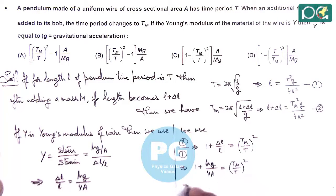And simplifying this gives us a value of 1/Y, which we are required to calculate, this is ((Tm/T)² - 1) times A/Mg, which matches with option A. So the answer to this question is option A.